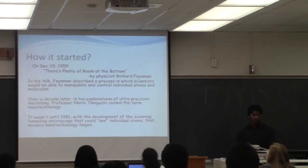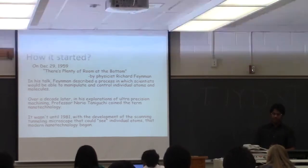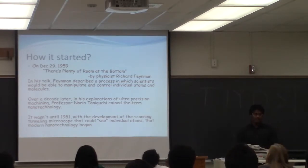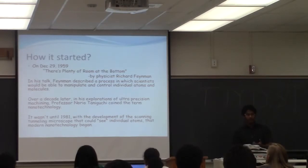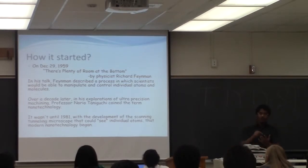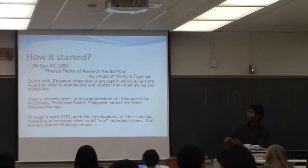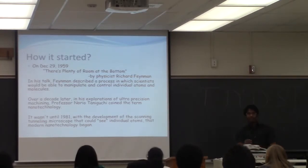Let us go to the past — how it all started. On December 29, 1959, a physicist by the name Richard Feynman, in a lecture, described a process in which scientists would be able to manipulate and control individual atoms and molecules. A compound is made up of atoms and molecules. He went down to the level of atoms and talked about nanoparticles. He said, 'There is plenty of room at the bottom,' meaning he narrowed down to the atomic level and spoke about this.